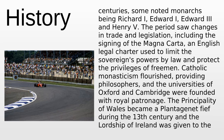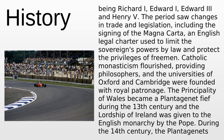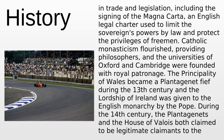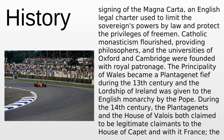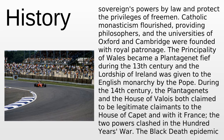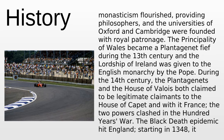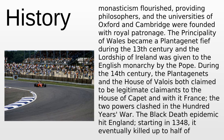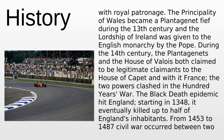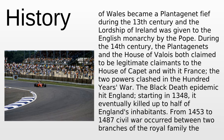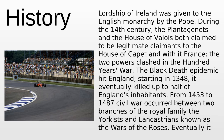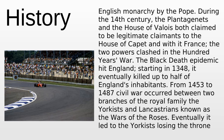Subsequently, the House of Plantagenet from Anjou inherited the English throne under Henry II, adding England to the Angevin empire of fiefs in France including Aquitaine. They reigned for three centuries, with noted monarchs including Richard I, Edward I, Edward III and Henry V. The period saw changes in trade and legislation, including the signing of Magna Carta, an English legal charter limiting the sovereign's powers by law and protecting the privileges of free men. Catholic monasticism flourished, universities of Oxford and Cambridge were founded with royal patronage, and the Principality of Wales became a Plantagenet fief during the 13th century.